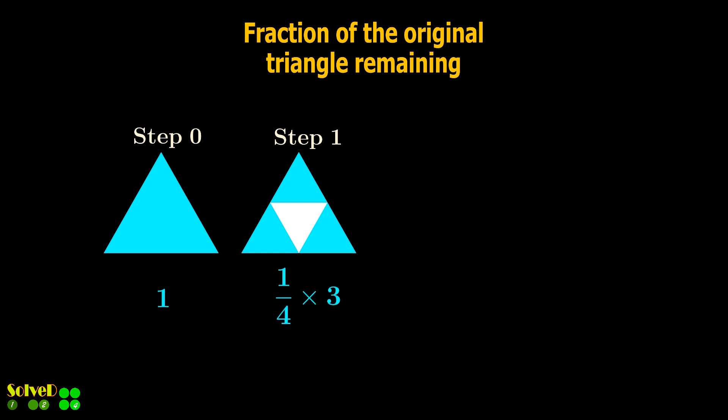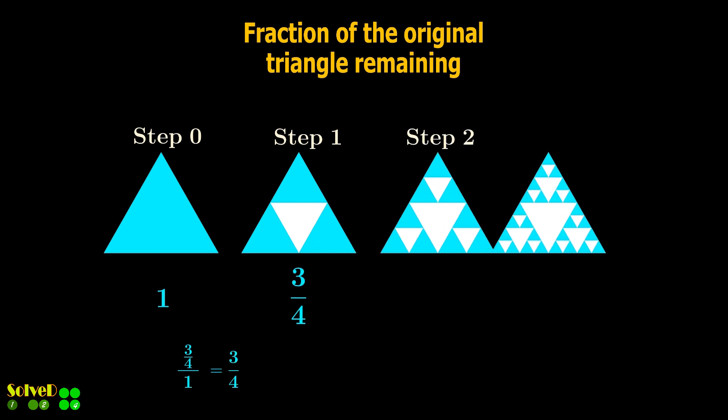So multiply one quarter by three to obtain the total fraction of all blue triangles. Now divide this by the first term, which is one. So the multiplication factor or the common ratio is three by four.